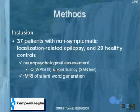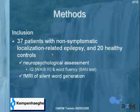We included 37 patients with non-symptomatic localization-related epilepsy and 20 healthy controls. Those were matched for age and sex, and we did two assessments: one neuropsychological assessment and one functional MRI assessment.